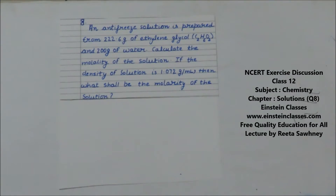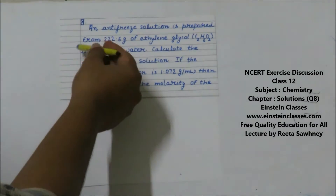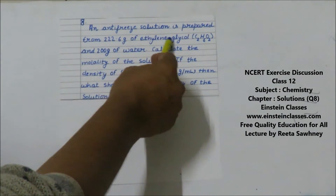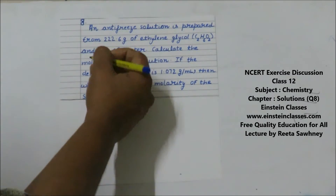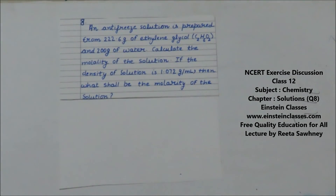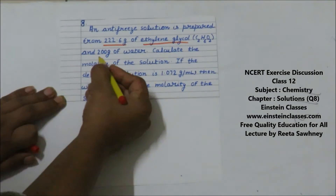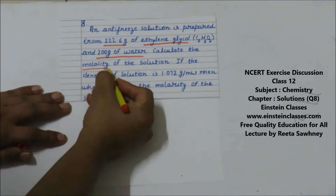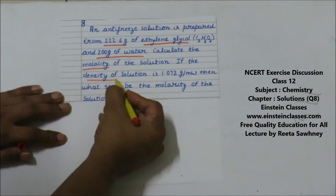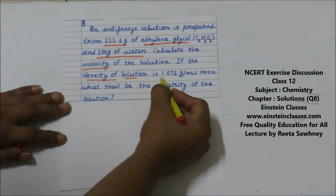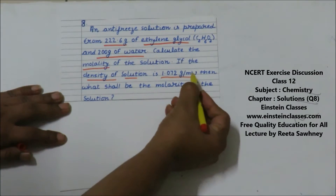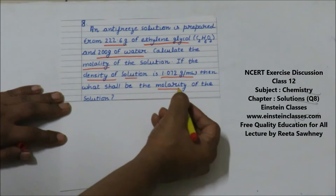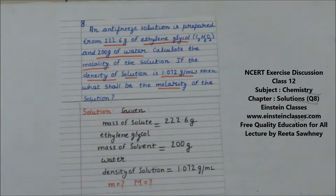We are going to discuss the problem of the NCERT back exercise solution chapter. The problem is: an anti-freeze solution is prepared from 222.6 grams of ethylene glycol and 200 grams of water. What is the molality of the solution? If the density of the solution is 1.072 gram per ml, then what shall be the molarity of the solution?